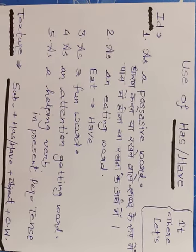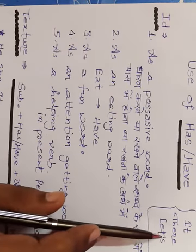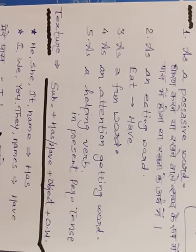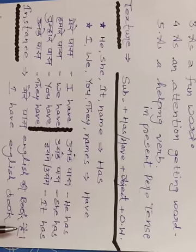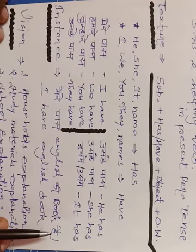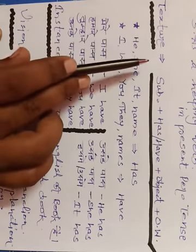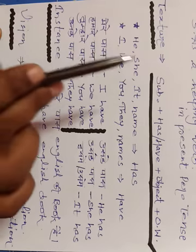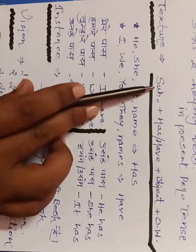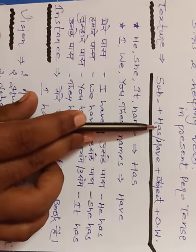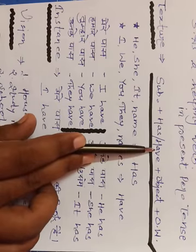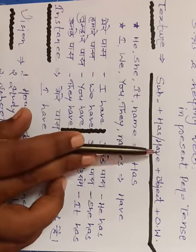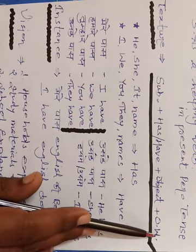Now let's have a look at the structure — the texture. If we are doing an affirmative sentence, the structure is: Subject + has/have + object + other words. Yahaan par main tense ki baat nahi kar raha hoon — common roop mein hum has aur have ko kitne easy way pe use karte hain aur apne spoken mein kar sakte hain. So, affirmative sentence: Subject + has/have + object + other word.